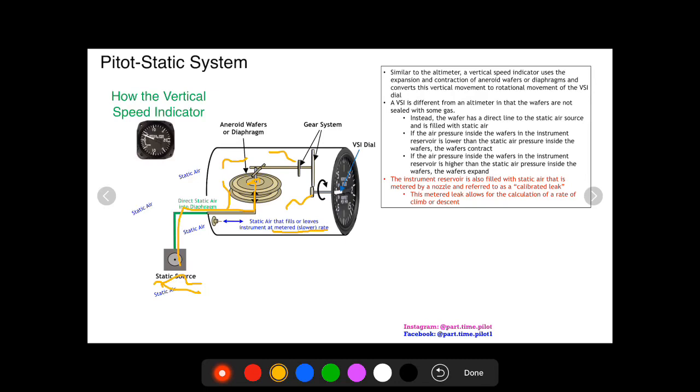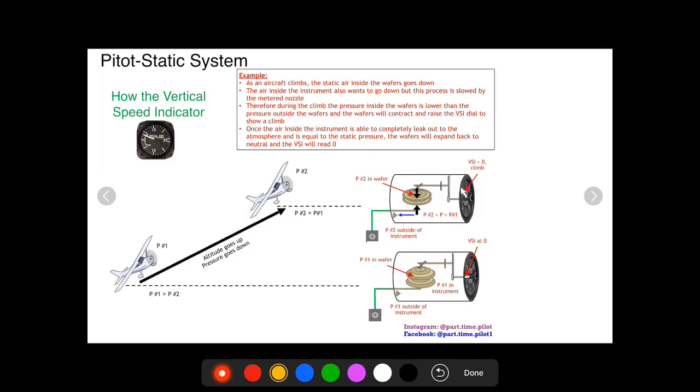Now the best way to describe this is with an example. So in this example, we have an aircraft climbing. The aircraft starts down here at altitude number one and pressure number one, and climbs up here to altitude number two and pressure number two. Now we all know that as the altitude goes up, the pressure goes down. So P1 is greater than P2. The pressure down here is greater than the pressure up there at pressure two.